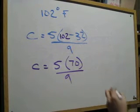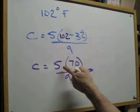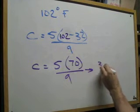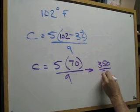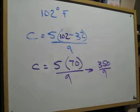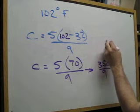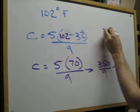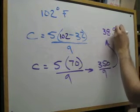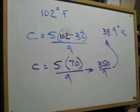And we're going to leave everything as is. Keep going. We do our multiplication on the top here. 350 divided by 9. And we have a temperature, then, when we do our division, of 38.9 degrees Celsius.